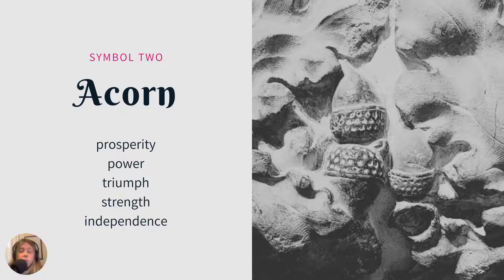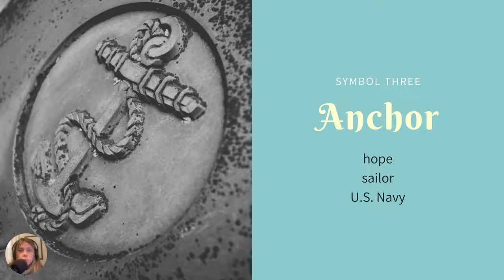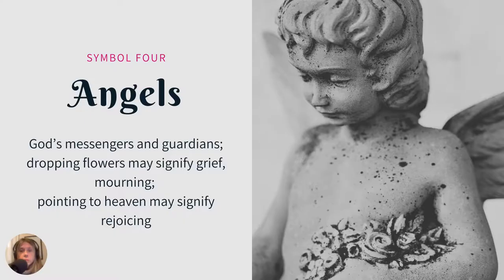Acorns have a lot of meanings: prosperity, power, triumph, strength, independence. Again, one of those symbols that could signal a virtue or personality that the person had. The anchor has signified hope for a very long time. Sometimes you'll find an anchor with a heart. It also could indicate a sailor or someone that was in the U.S. Navy, so that will take a little research to find out more about that ancestor.